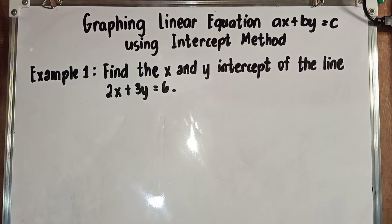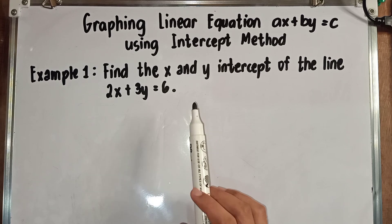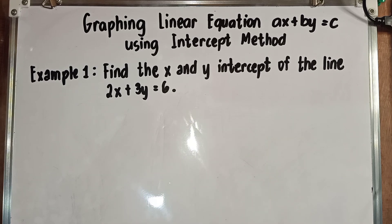We are done with plotting an ordered pair in a Cartesian plane. So now let's proceed to graphing a linear equation AX plus BY is equal to C using the intercept method. For example number 1, you are asked to find the X and Y intercept of the line 2X plus 3Y is equal to 6. How are you going to use the process to locate the given ordered pair?